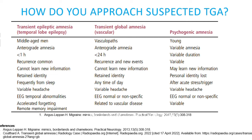Transient epileptic amnesia is caused by epileptiform activity arising in the medial temporal lobes, and it can be difficult to distinguish from TGA because they both tend to affect similar age groups and present with prominent anterograde amnesia. However, transient epileptic amnesia is more likely to present following multiple events; the episodes tend to be briefer, patients may exhibit clinical features of epilepsy, have an abnormal EEG, or have a clear-cut response to anti-epileptic drugs.